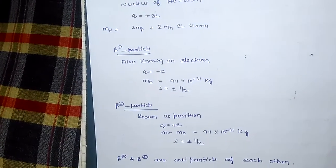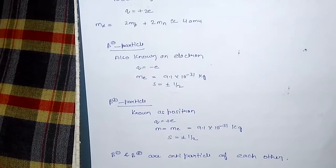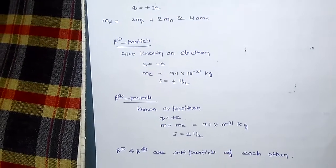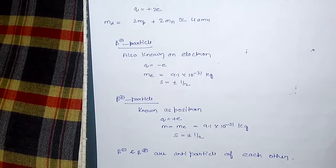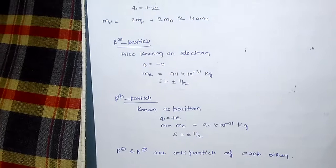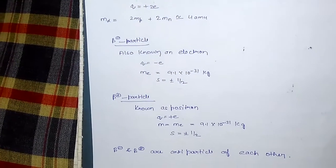Beta positive particle, known as positron: q equal to plus e. Mass equal to mass of electron. S equal to plus minus half. Beta negative and beta positive are anti-particle of each other.